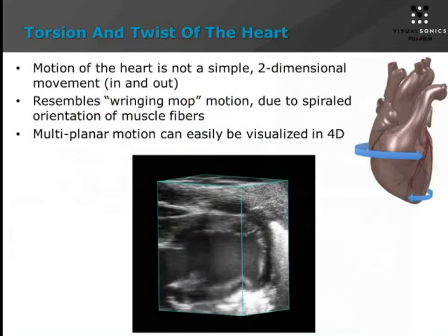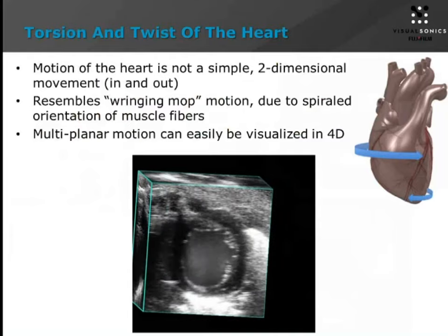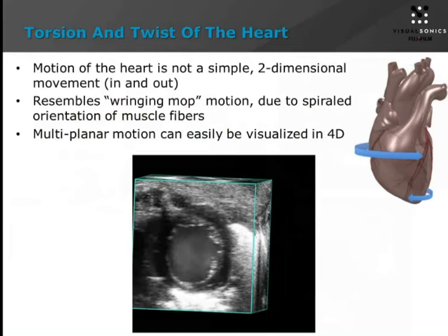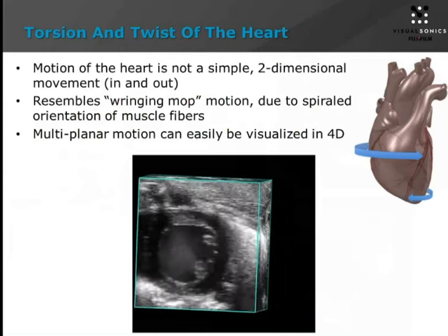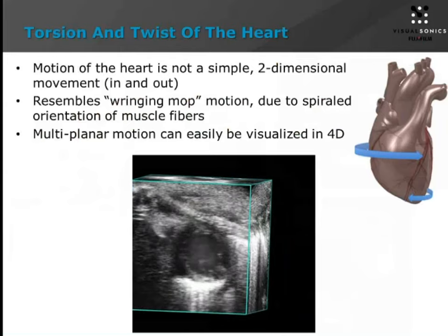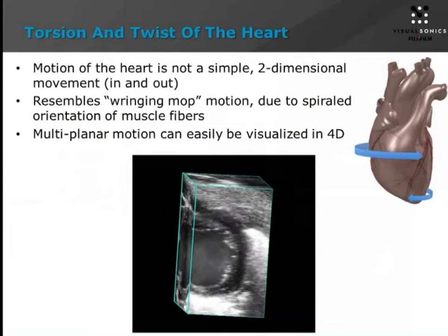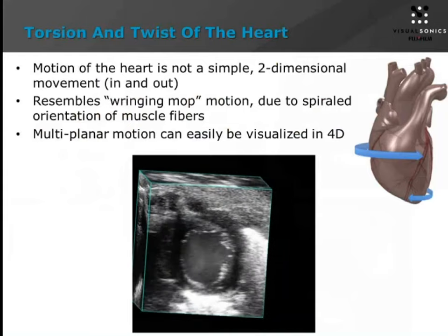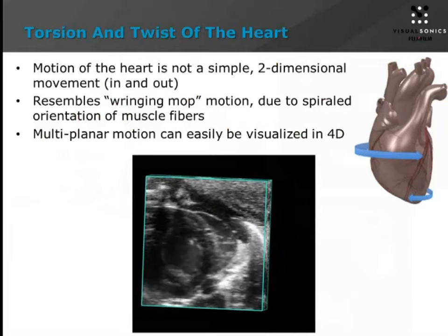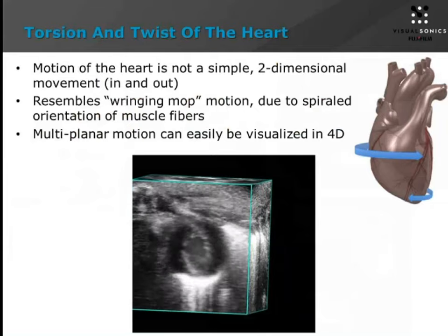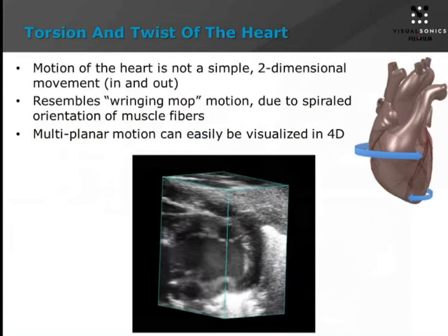I'm going to pass over to Christina to give commentary about what she's seen in the field as she's been developing this mode. Thank you, Stephen, and hello everyone. I'm so happy to participate in this webinar today and talk about this awesome new 4D imaging mode. As Stephen alluded to, 4D really makes no assumptions geometrically or temporally. What we know about the heart is that its motion is not simply a two-dimensional in-and-out motion — it resembles more the wringing of a mop, with a twist or torsion rotation that happens due to the spiral rotation of the muscle fibers within the heart.